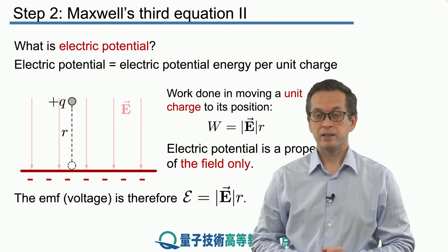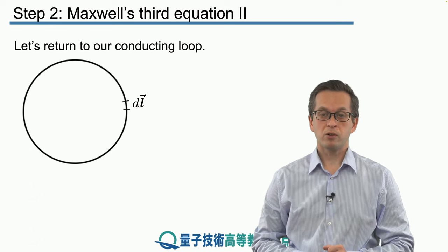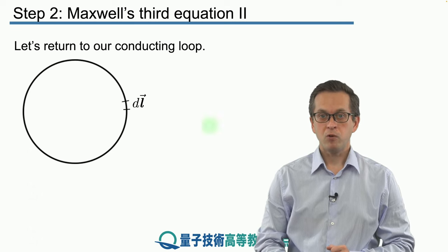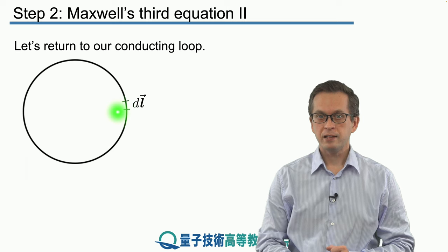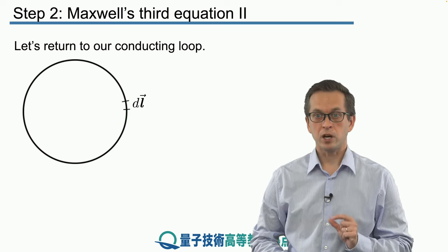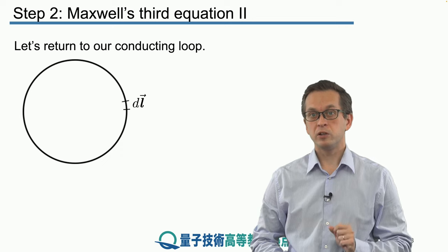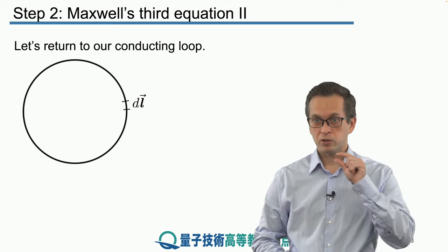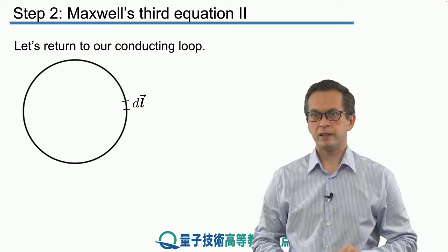Now, where does that leave us? Let's return to our conducting loop. And now what we can do is we can divide this loop into these very small chunks, these very small lengths, denoted by dl. And really what you should be thinking about is infinitesimally small.